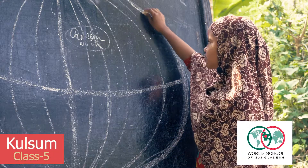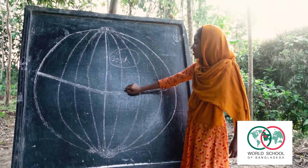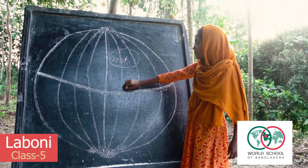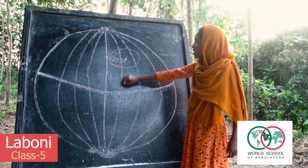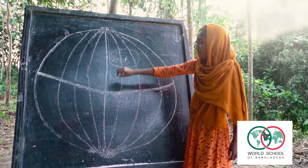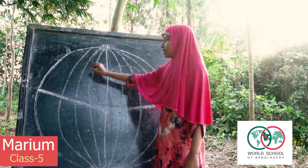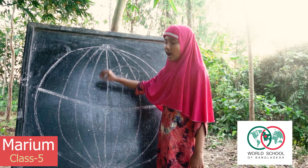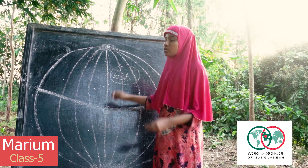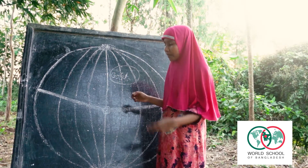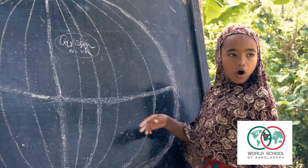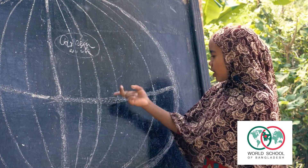This is Earth. Its shape is a sphere. The latitude divides the Earth into two equal parts. It's called the equator.